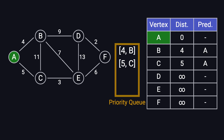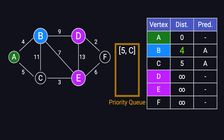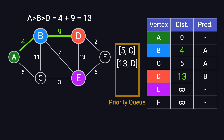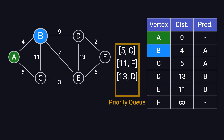The priority queue now contains 4B and 5C. Since B has the shorter distance, we process B next. B is connected to A, C, D, and E. Since A is already processed, we skip it. For C, the shortest known path from A is 5, but going through B would cost 4 plus 11 equals 15, which is worse, so we don't update C. For D, reaching it through B costs 4 plus 9 equals 13, which is better than infinity, so we update D's shortest distance to 13, set B as its predecessor, and push 13D into the queue. Similarly, reaching E through B costs 4 plus 7 equals 11, so we update E's shortest distance to 11, set B as its predecessor, and push 11E into the queue. Finally, we mark B as processed.